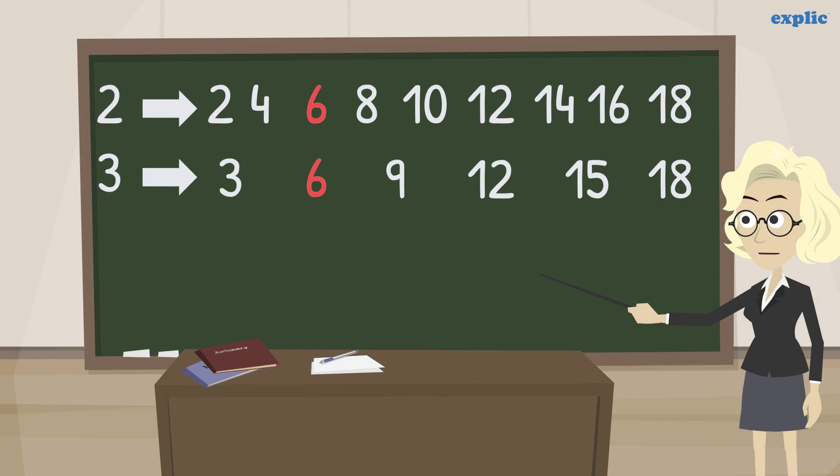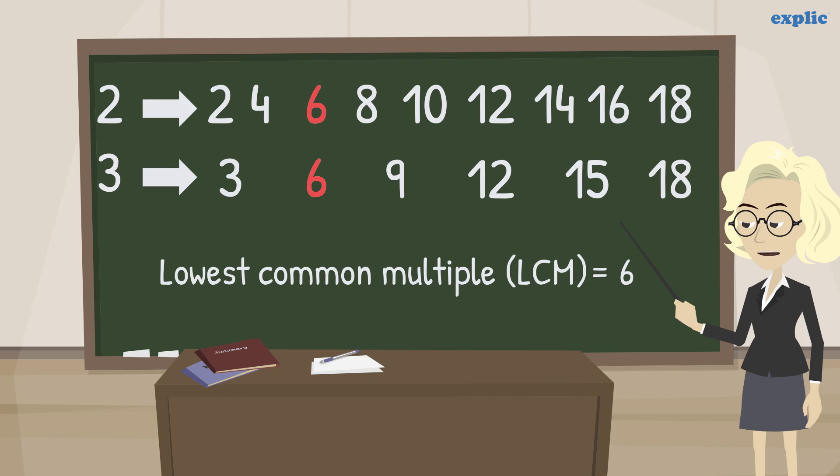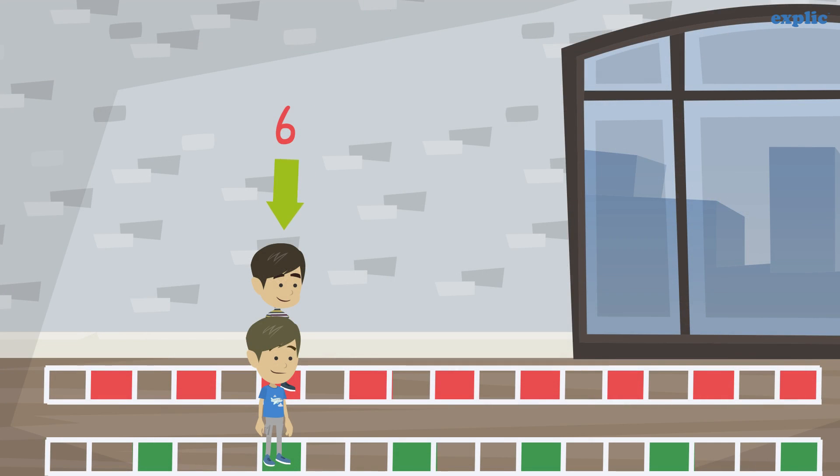The lowest value out of common multiples is 6, which is called the Lowest Common Multiple or LCM. Therefore, Sam and Sid met on the LCM of 2 and 3 for the very first time, which is 6.